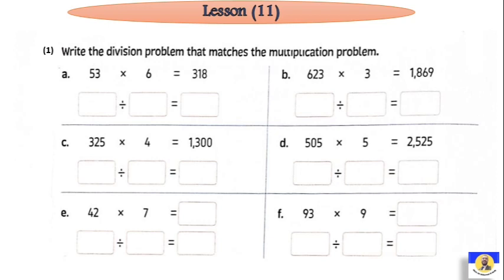We are looking at our question now, habaybi. We have a multiplication, and we want to write the related division. How do we change it? Let's do it easily — the answer equals 53.